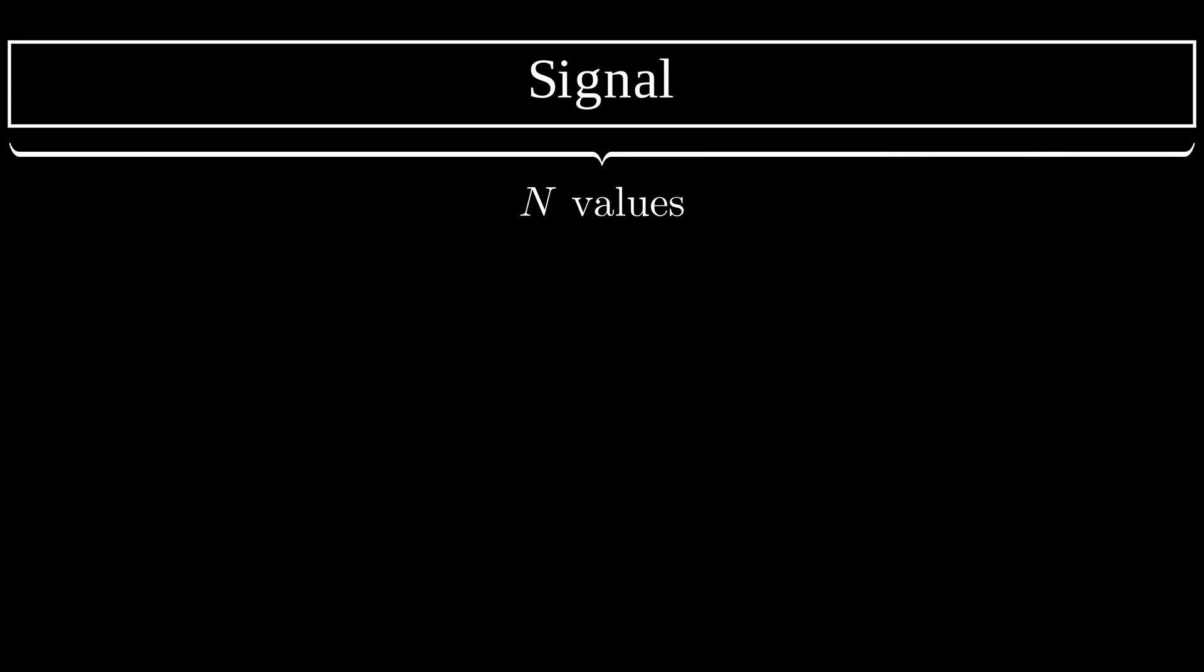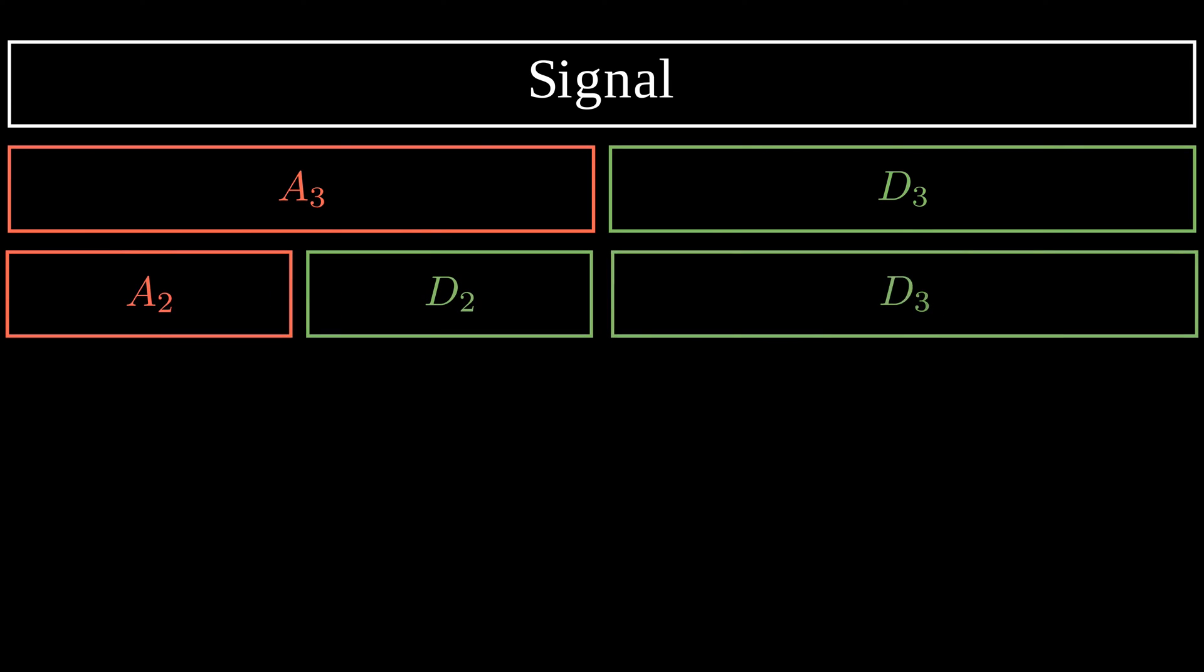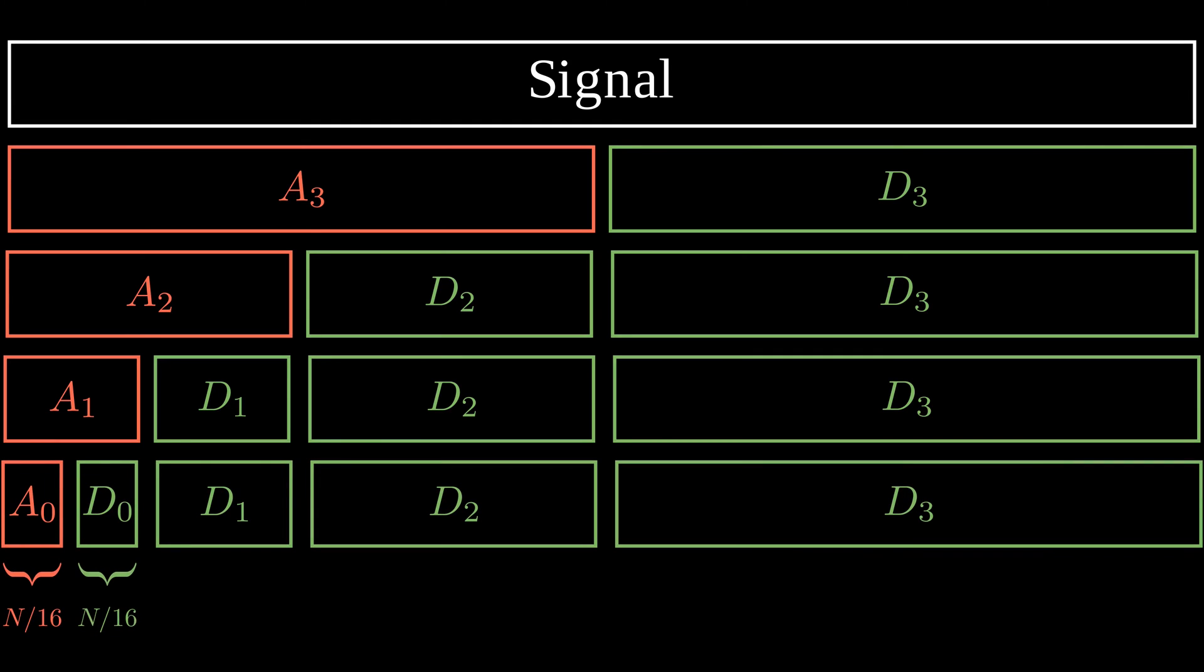Once we've completed the first transform, why not try another transform on the new approximation space, giving an even more approximative signal with a new detail space completing it. And again, and again. As we continue to apply transforms, we are compressing the important information of the signal into a smaller and smaller space. We talk about the depth or the level of a transform.